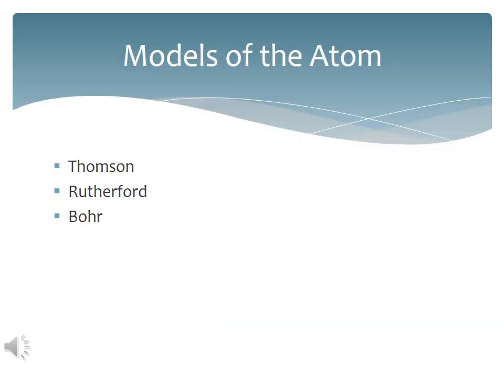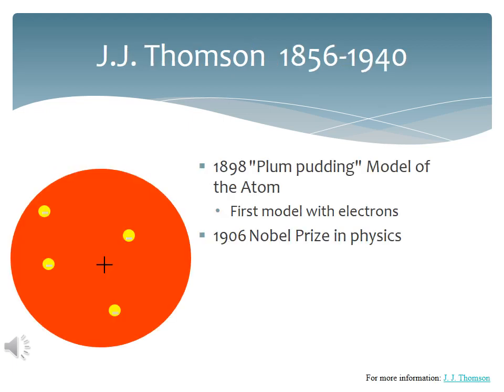In this chapter, we start by looking at the historic development of the Thomson and then the Rutherford models of the atom. The Thomson model of the atom was the first to have internal structure. He had electrons which were negative, and then something else which was positive.